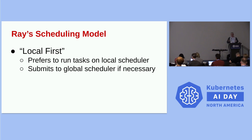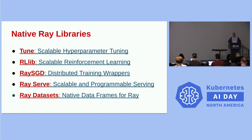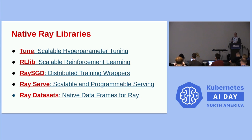Similarly, Ray's scheduling model is also local-first. It tries to use a local worker scheduler for tasking whenever it can and only invokes the global cluster scheduler when necessary. This local-first strategy helps things perform as well as possible over the cluster. Ray comes with a bunch of great native libraries: a hyperparameter tuning library, a reinforcement learning library, a generic stochastic gradient descent library, scalable and programmable model serving via Ray Serve, and relatively new — Ray Datasets, which are native data frames for Ray, putting it on closer equal footing with Spark or pandas.